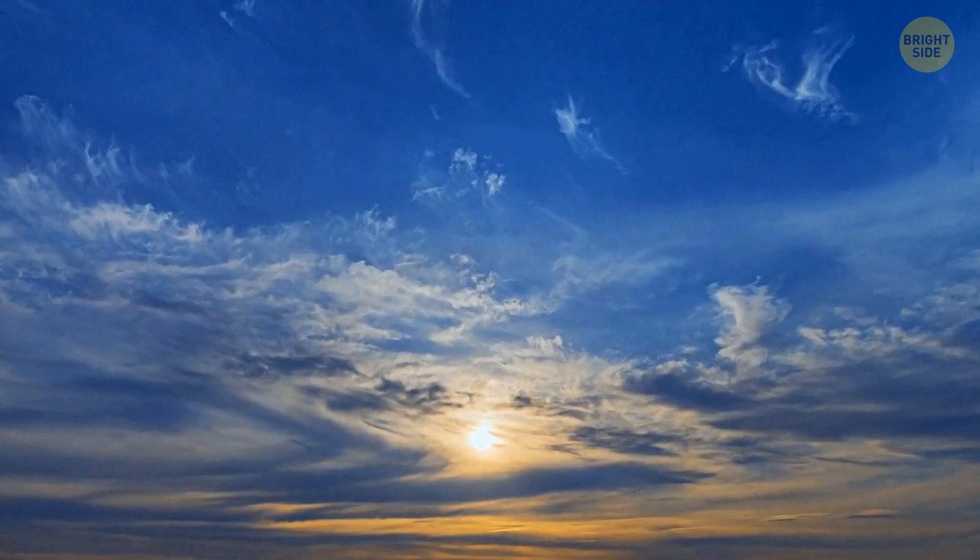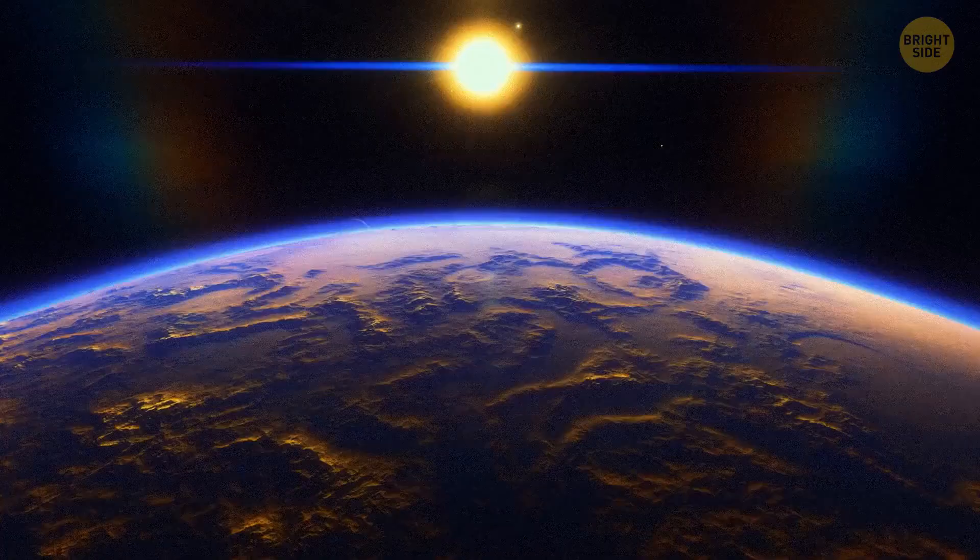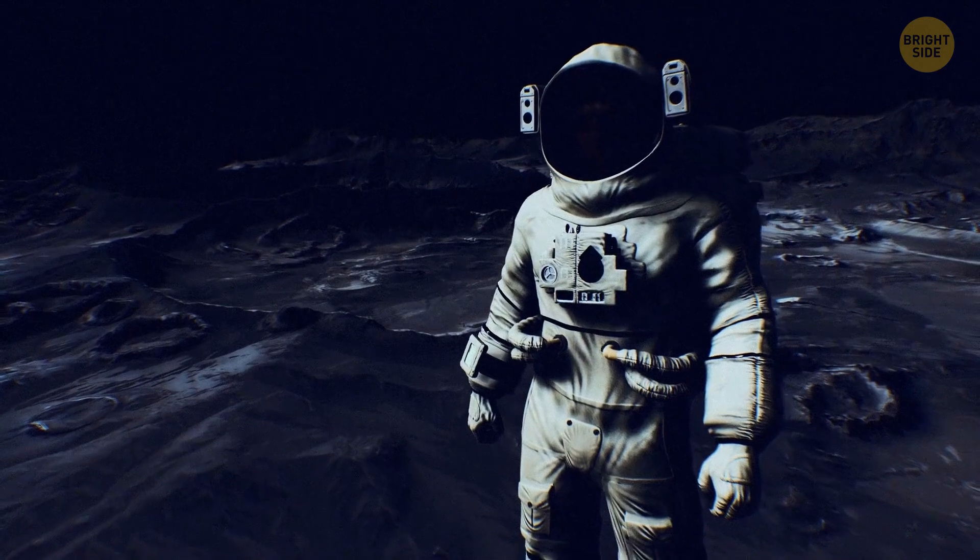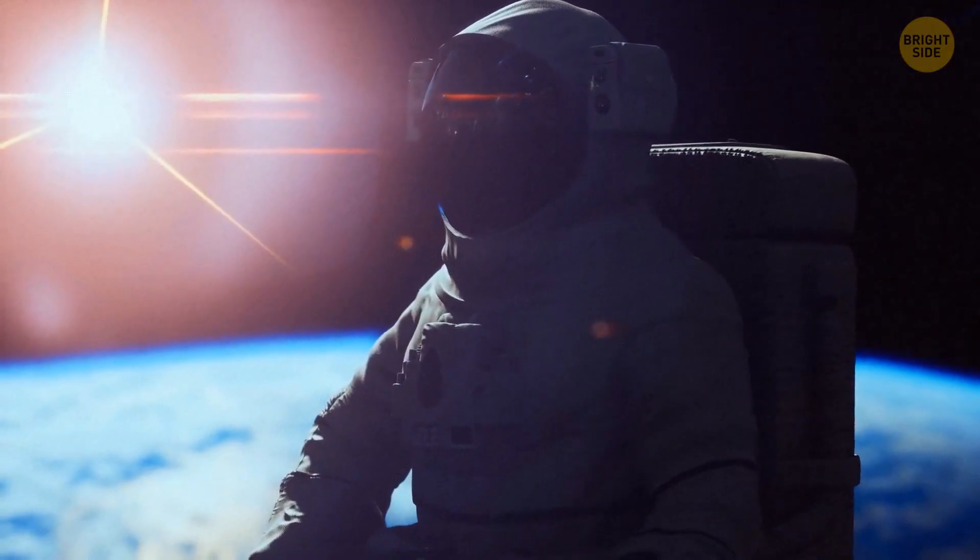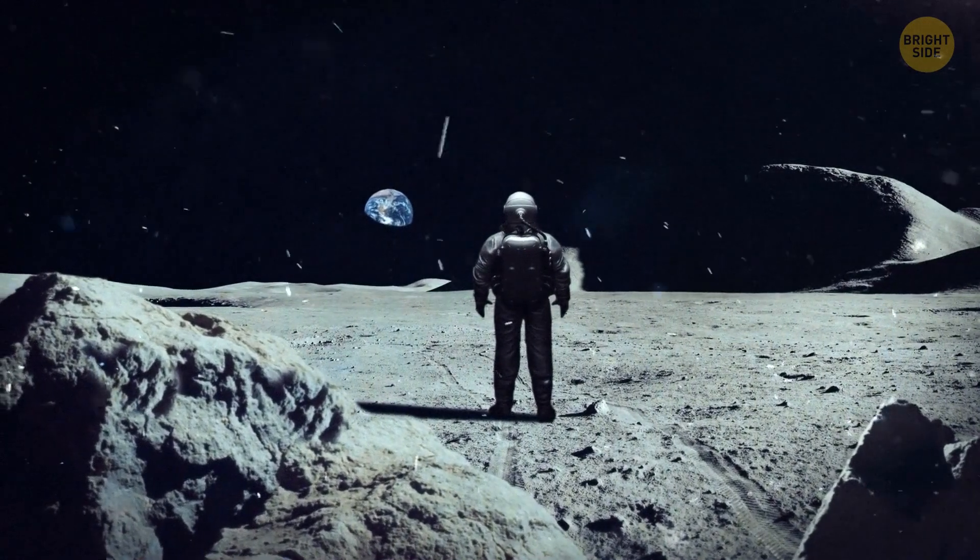During the daytime, the sky on our home planet is blue because of the diffusion of light. It happens when sunlight goes through the atmosphere. But if you were on the Moon or somewhere else in space, there would be no atmosphere to spread this light around. That's why the sky there would always appear black.